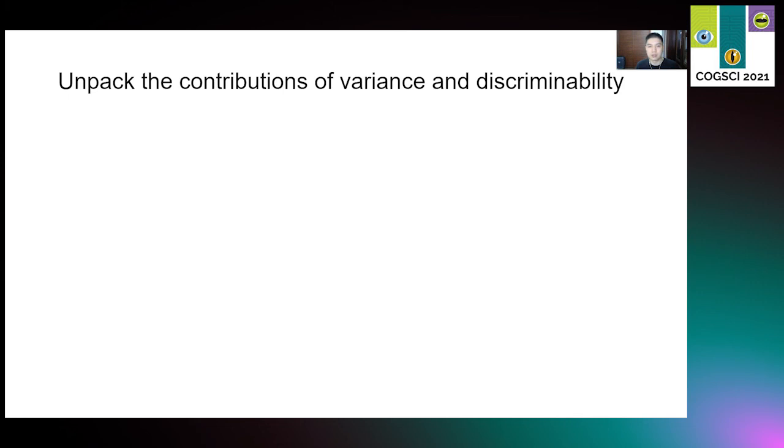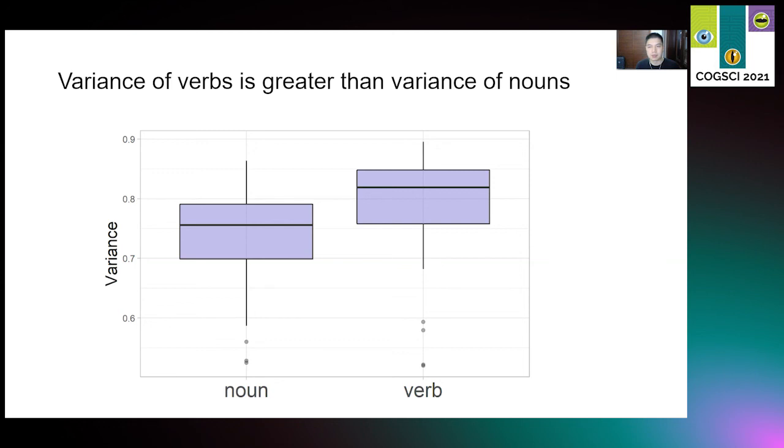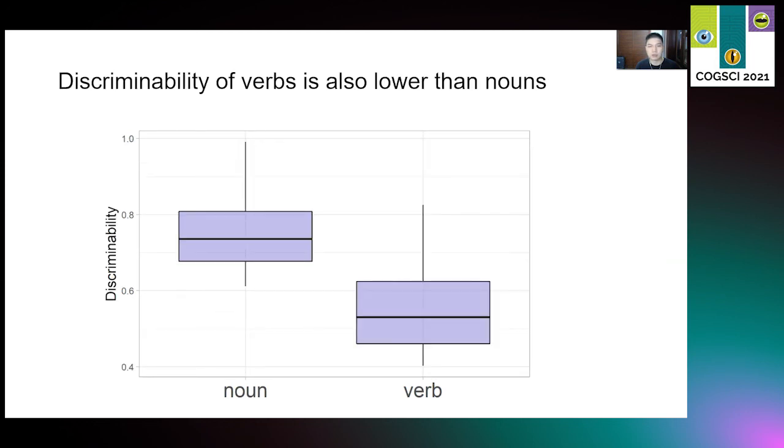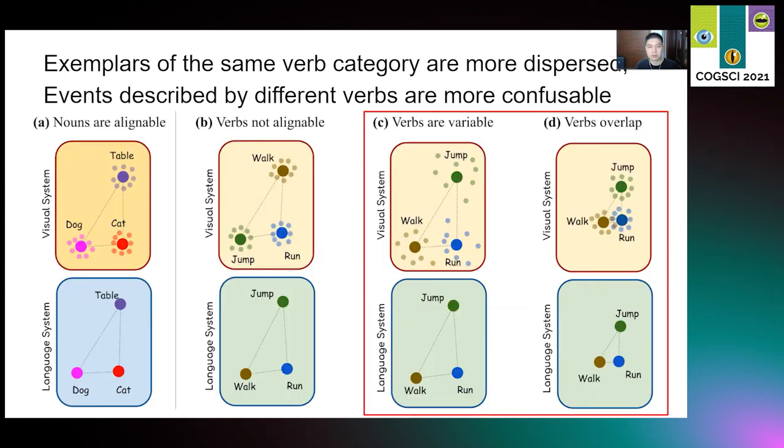First, we consider the variance of exemplars of the same category, which is defined as the average Euclidean distance between each exemplar's embedding and the category centroid in the visual domain. And we consider the discriminability of exemplars from different categories, which is calculated as the average Euclidean distance of all combinations of pairs of category centroids. We found that the variance of verb concept is greater than noun concept. It means that different events labeled by the same noun are more like each other than events labeled by the same verb. Also, the discriminability of verbs is reliably lower than the discriminability of nouns. Taken together, compared to nouns, examples of the same verb category are more dispersed, and events described by different verbs are more confusable. Hence, we propose that verbs are harder to learn than nouns because of the high variance of visual events of the same verb category, and low discriminability of events of different verb categories.